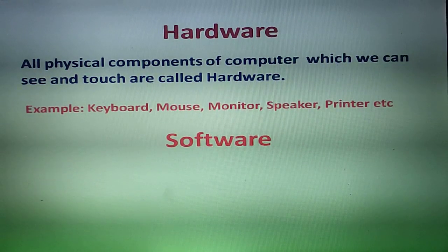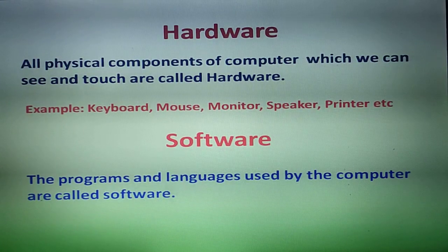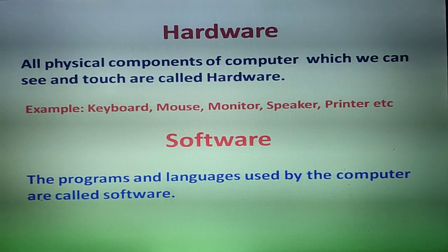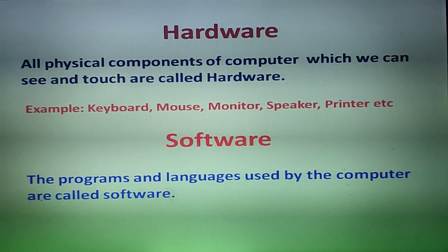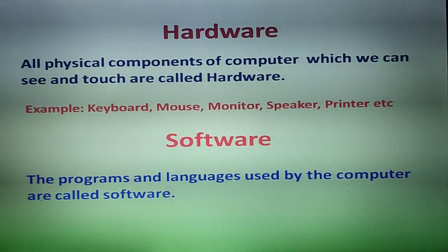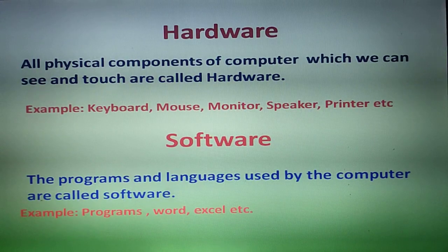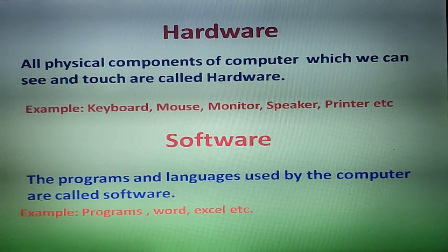The next component is software. The programs and languages used by the computer are called software. Software is also called a set of instructions or set of programs. In our computer system we use many application software and some system software — all of these are programs.